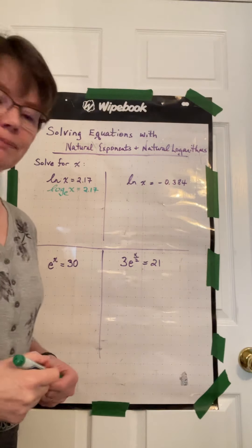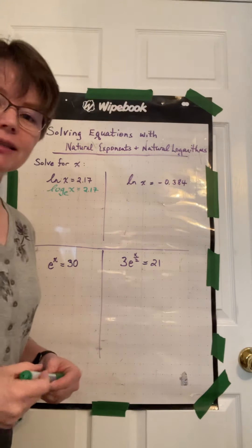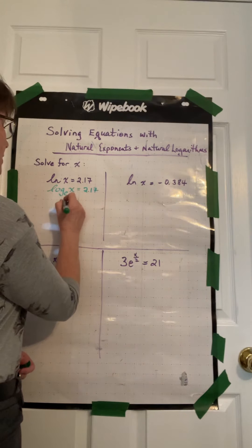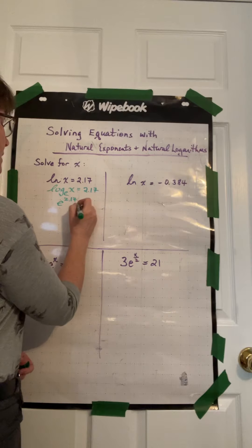Now we can rearrange from a log statement to an exponent statement. So e to the power of 2.17 is equal to x.